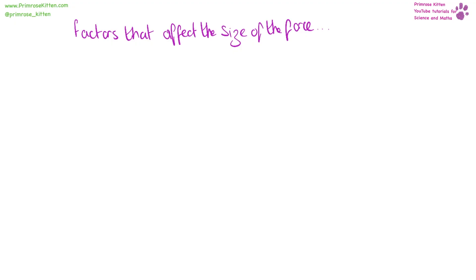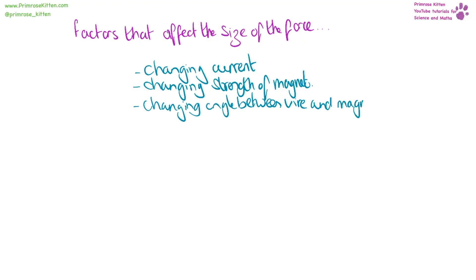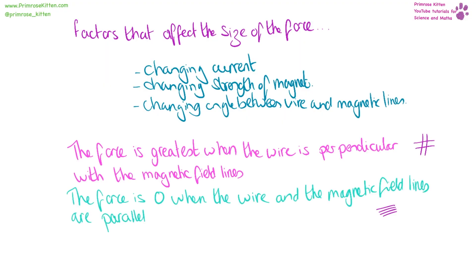We can change the size of the force by changing the current, by changing the strength of the magnet, or by changing the angle between the wire and the magnetic field lines. The greatest force is when the wire is perpendicular with magnetic field lines. And the force is going to be zero if the wire and the field lines are parallel.